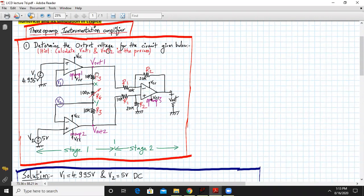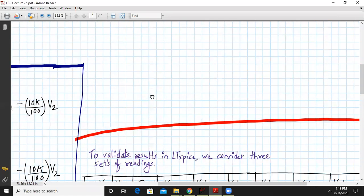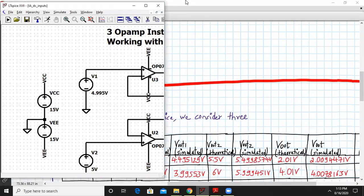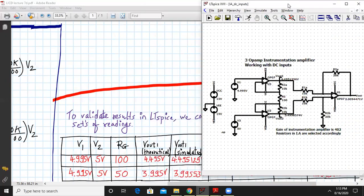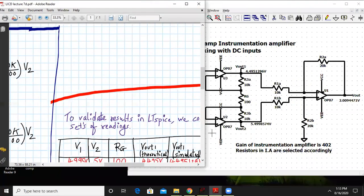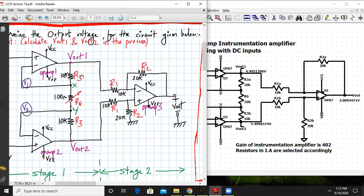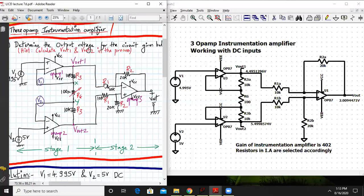Now to validate these results in LTSpice we consider three sets of readings. So let us open LTSpice window. It is already set up for your reference. So the circuit we can directly make and analyze. Let me first show you the circuit which we have built up.